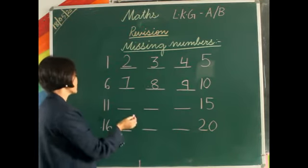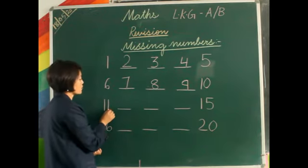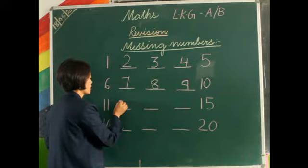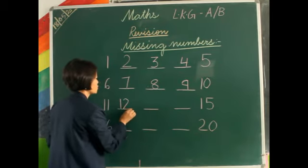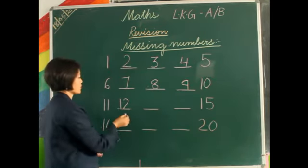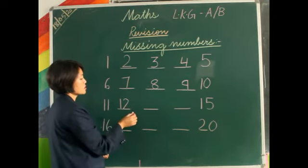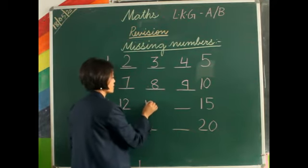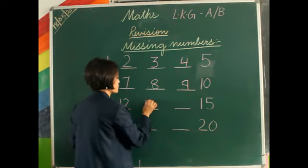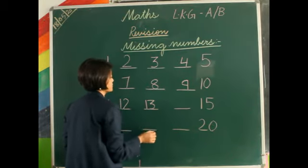After 10 is number 11 — that is 1, 1: eleven. So after 11 is 1, 2: twelve. After 12 is number 13 — 1, 3: thirteen.